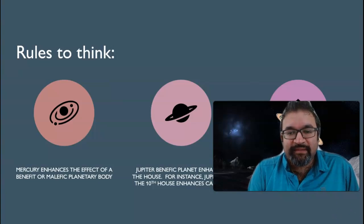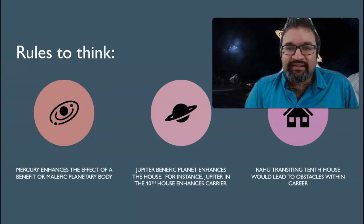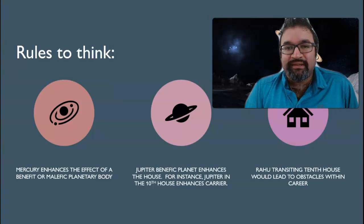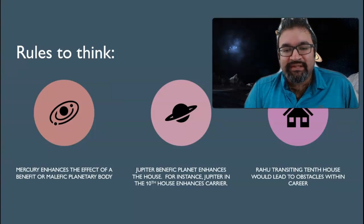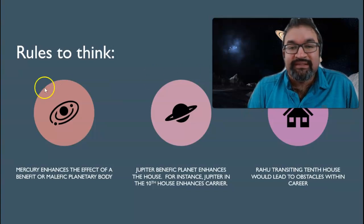What are some of the rules to think about? Rule number one: Mercury enhances the effect of a benefic or malefic — it takes on the characteristics of another planet that may be there. So if there's Jupiter, it actually enhances the benefic effect of Jupiter. Jupiter as a benefic planet going into the tenth house enhances the career, whereas Rahu transiting the tenth house would lead to obstacles with the career because it's malefic.